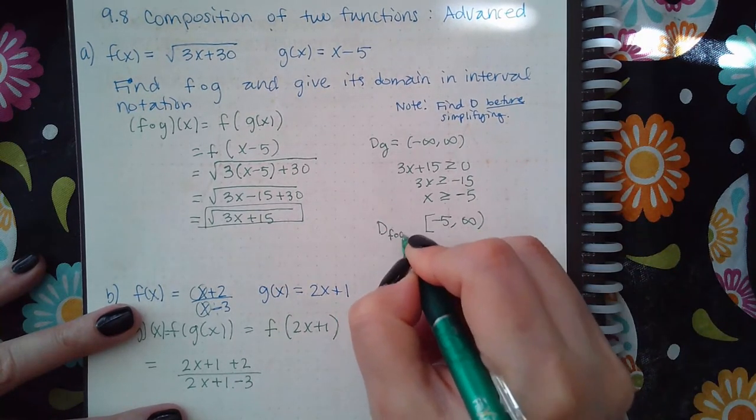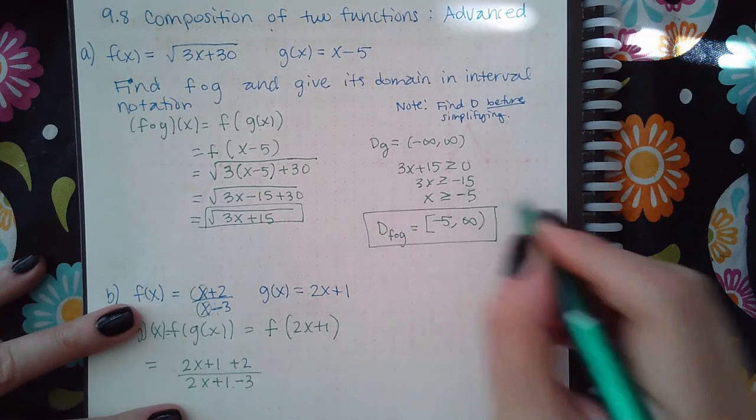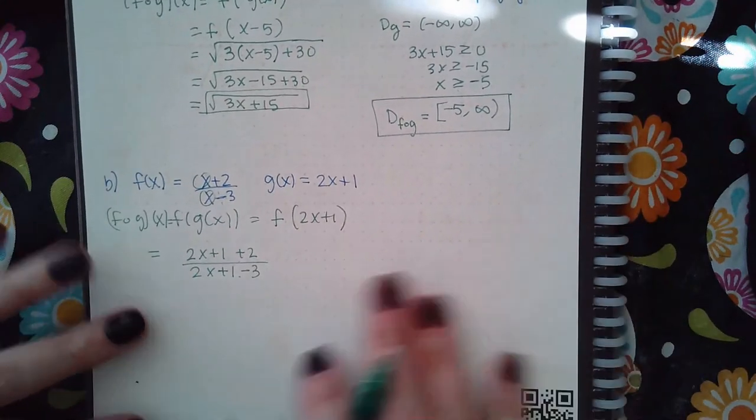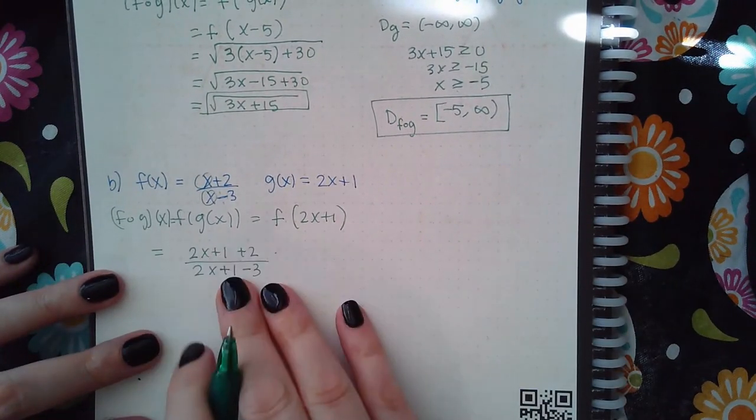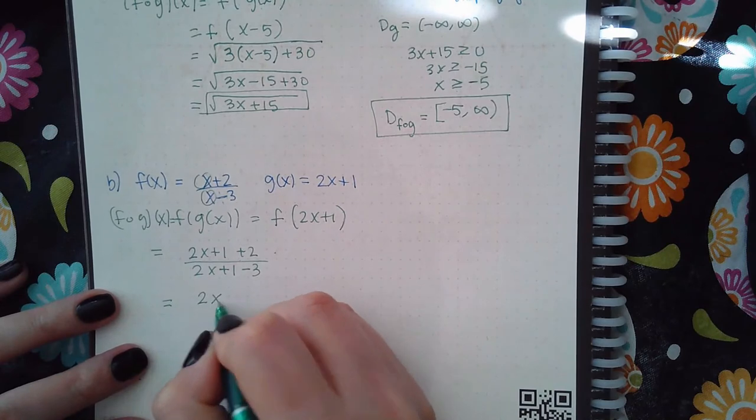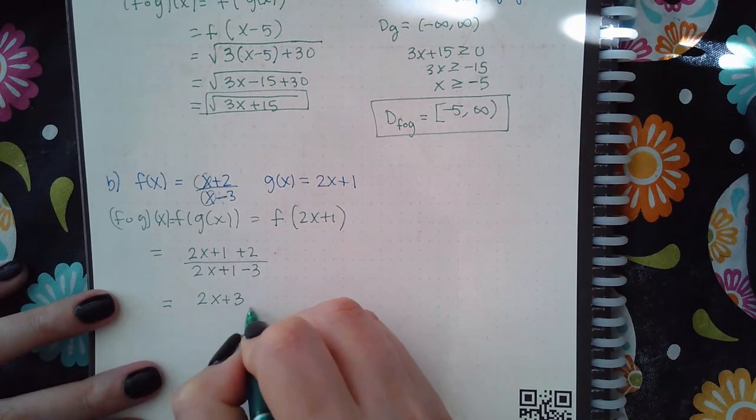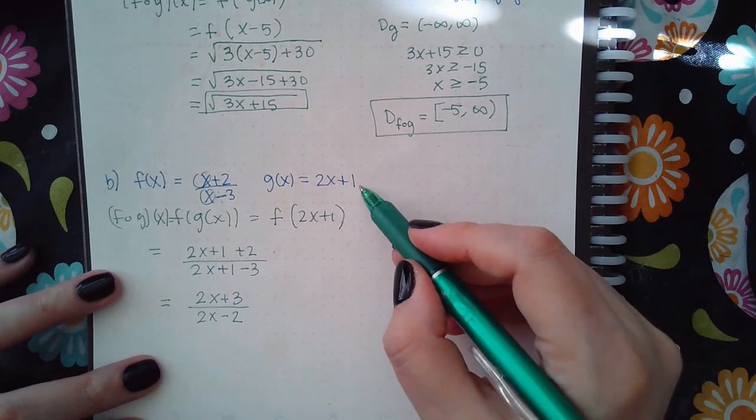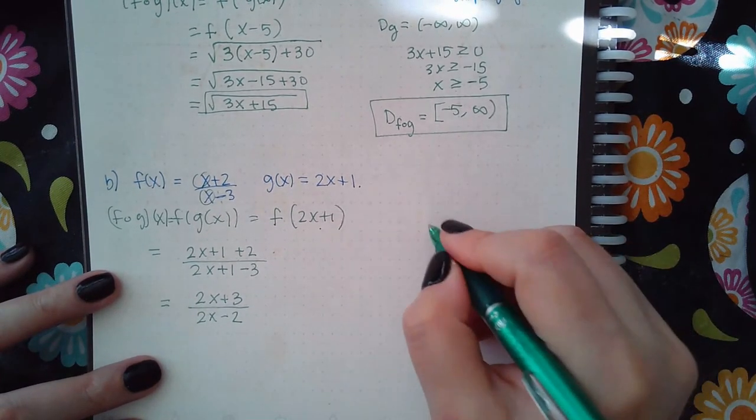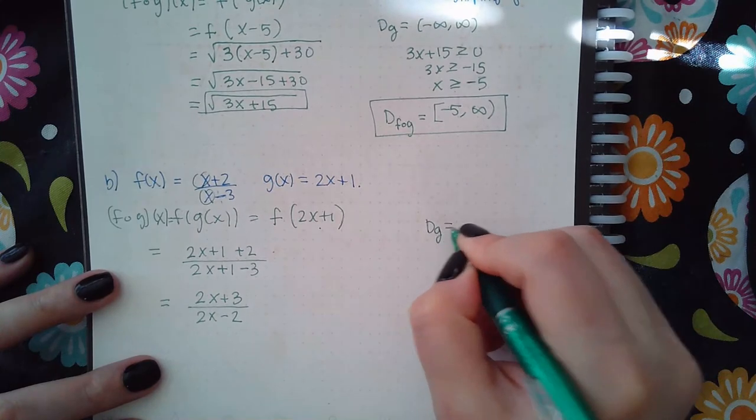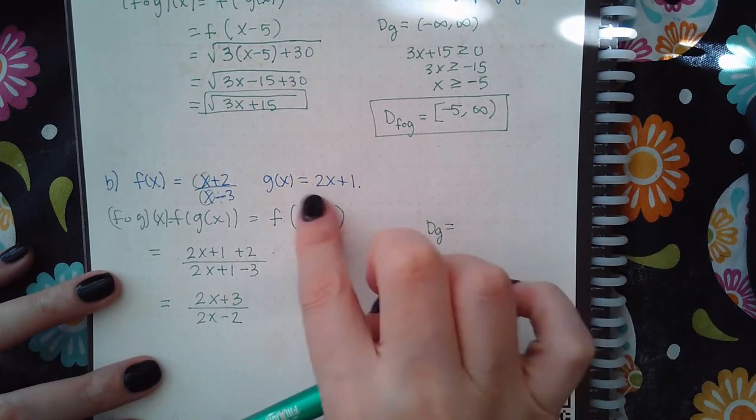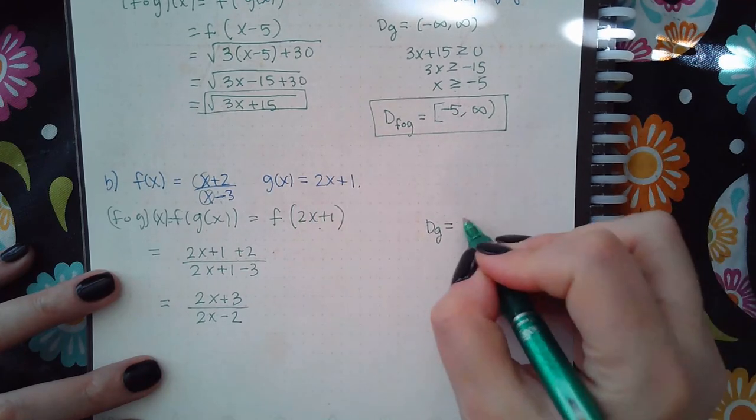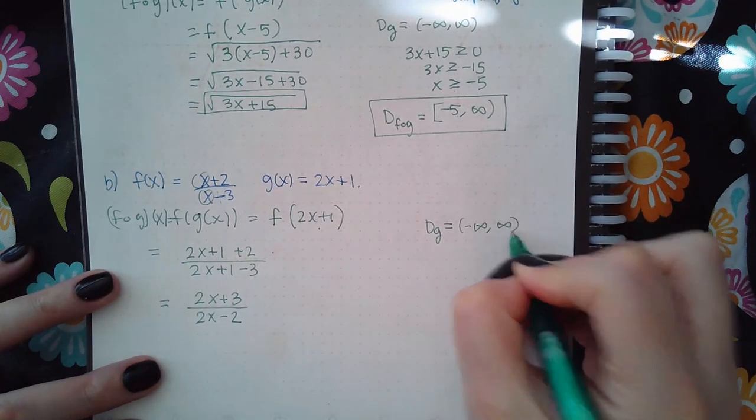Okay, now over here it's a little bit different. It's a fraction now, and you can go ahead and simplify this. This would be 2x plus 3 over 2x minus 2. So remember you go with the inside one, which was g. What is the domain of g? There's no fractions, no radicals, nothing like that, so the domain of that is negative infinity to infinity.